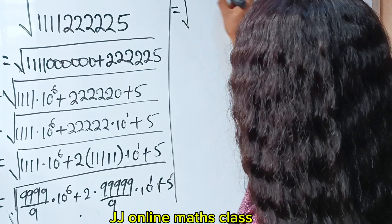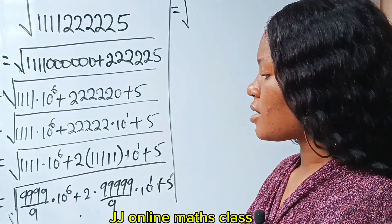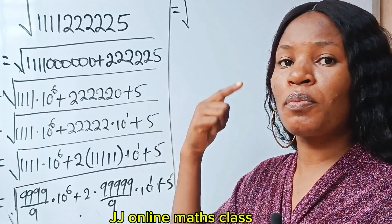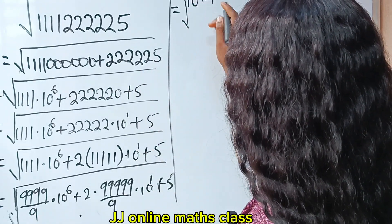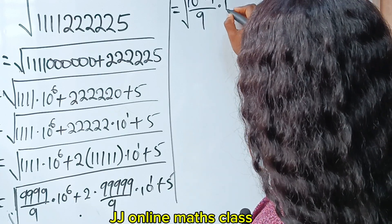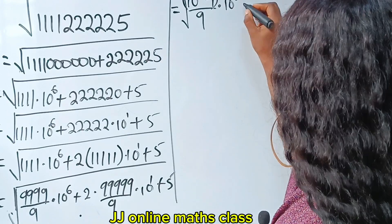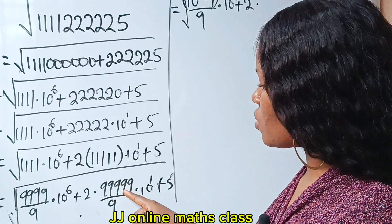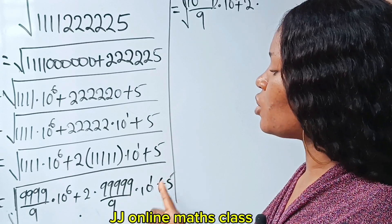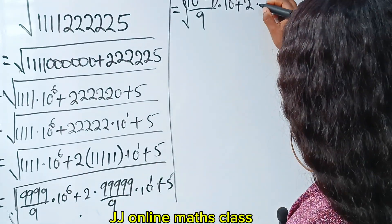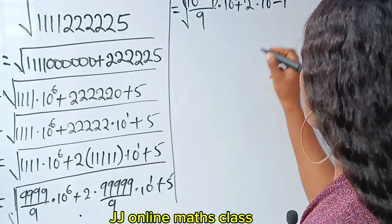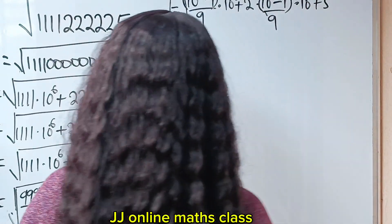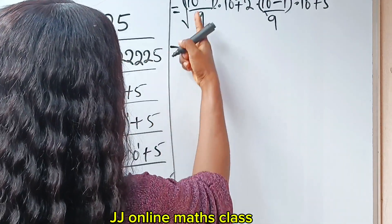Now, 9999 is the same thing as 10000 minus 1, which is 10 to the power of 4 minus 1. So we have (10 to the power of 4 minus 1) divided by 9, multiplied by 10 to the power of 6, plus 2 multiplied by (10 to the power of 5 minus 1) divided by 9, multiplied by 10 to the power of 1, plus 5.